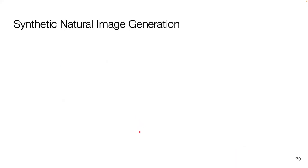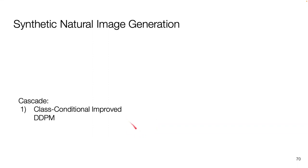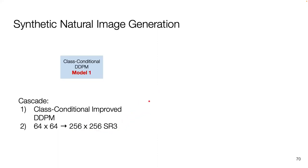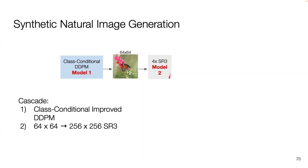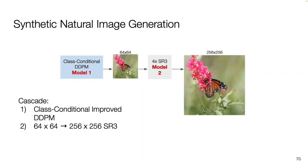For synthetic natural image generation, they tested a cascade of two models: the first being a class-conditional improved DDPM, and the second being the super resolution model upsampling to 256x256. A class-conditional DDPM model is fed a random label, generates a 64x64 sample, which is then fed into the SR3 model, outputting the final 256x256 resolution. This produces high fidelity output that is competitive with other super resolution techniques.